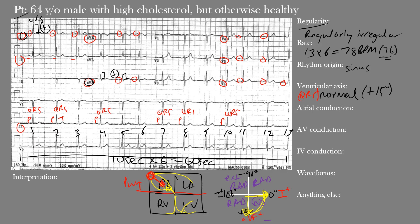With children you tend to see more rightward axis because in utero the right ventricle is the dominant portion of the heart, whereas in adults the left ventricle takes over and things shift leftward with age. The axis here was positive 15 degrees, which sits well within the normal range. So the ventricular or QRS axis here is normal.